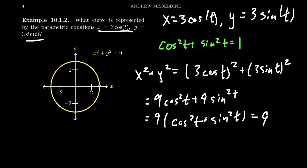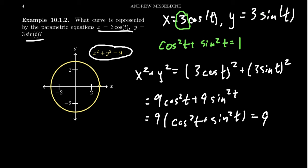Therefore, if we take this parameterization — x equals 3 cosine of t, y equals 3 sine of t — and remove the parameter, we get back the usual equation of a circle: x squared plus y squared equals 9. This is a circle centered at the origin with a radius of 3. Notice the 3 was the coefficient in front of the cosine and sine — we'll come back to that in just a second.